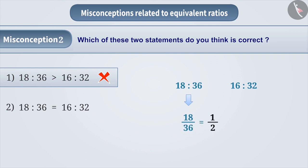And 16 is to 32 is equal to 16 by 32, which is also equal to 1 by 2. Since the value of both the fractions is the same, that is, 18 is to 36 is equal to 16 is to 32, both the ratios are equivalent ratios. Hence, the correct answer is option 2.